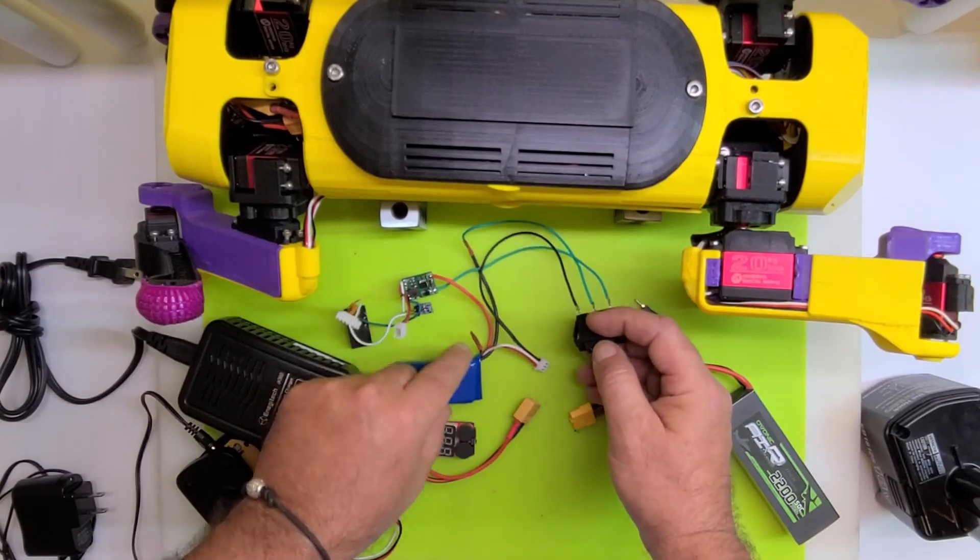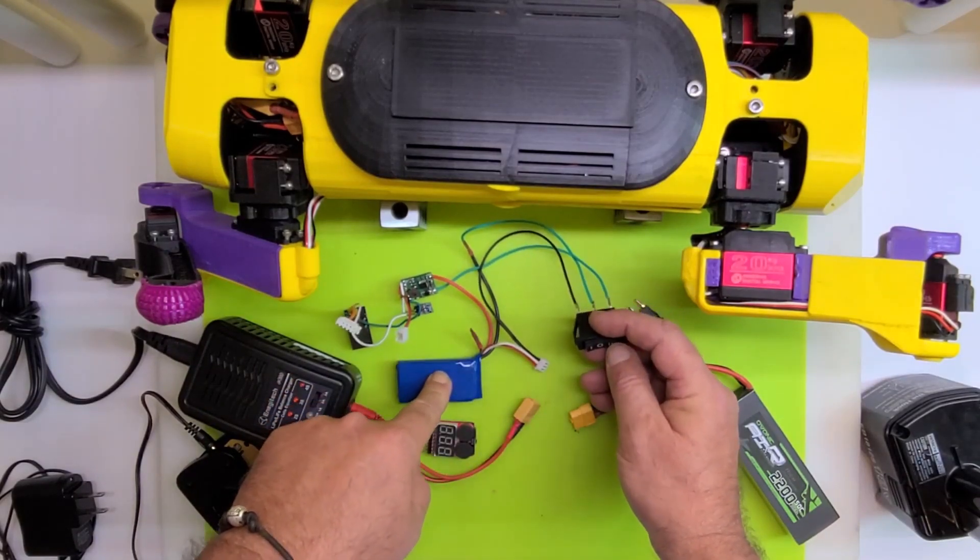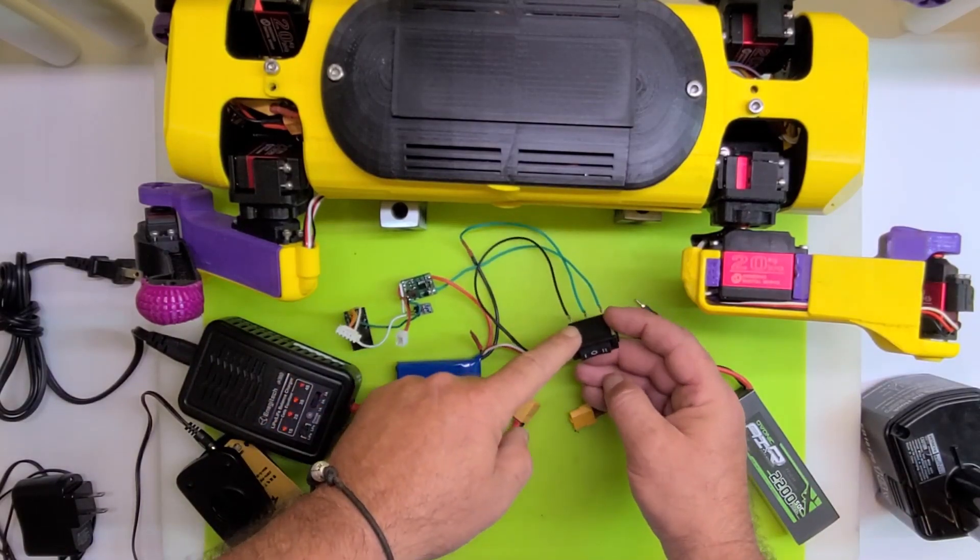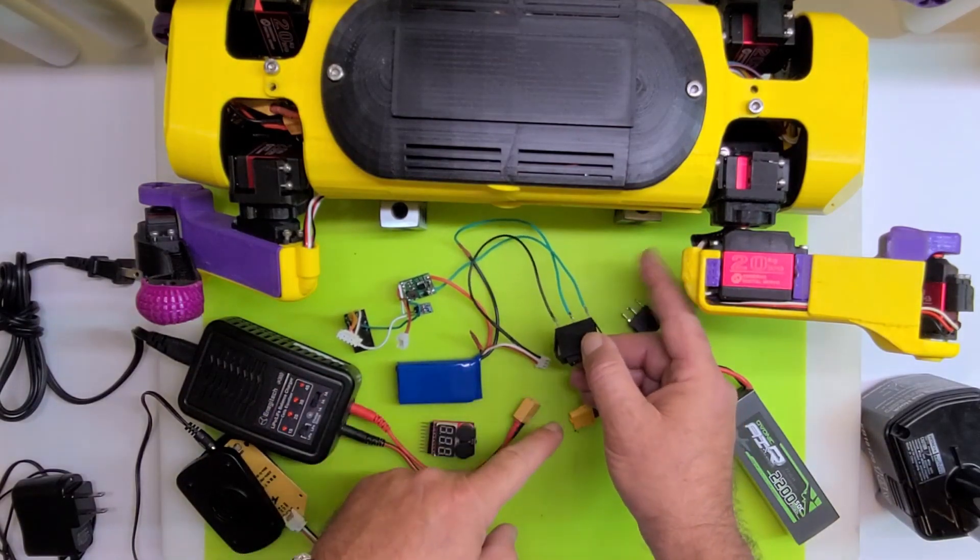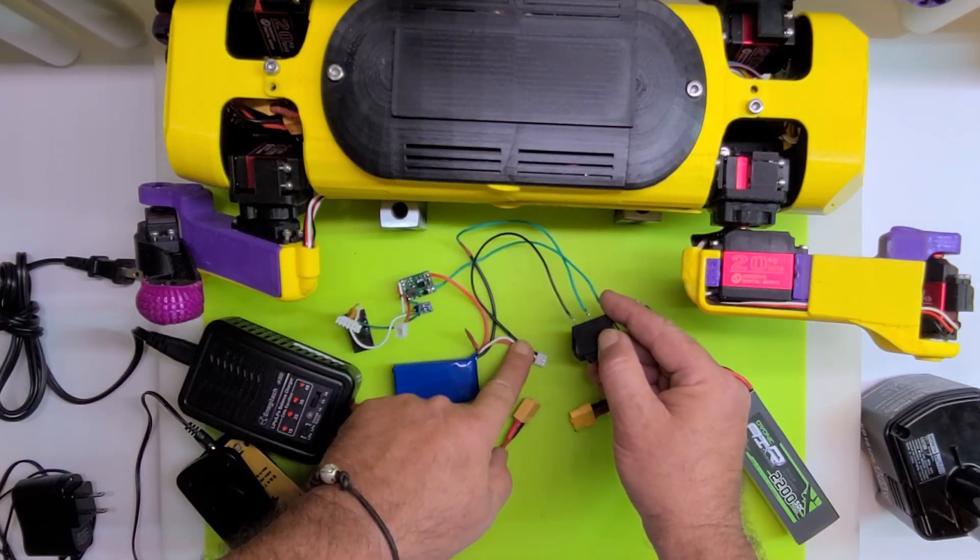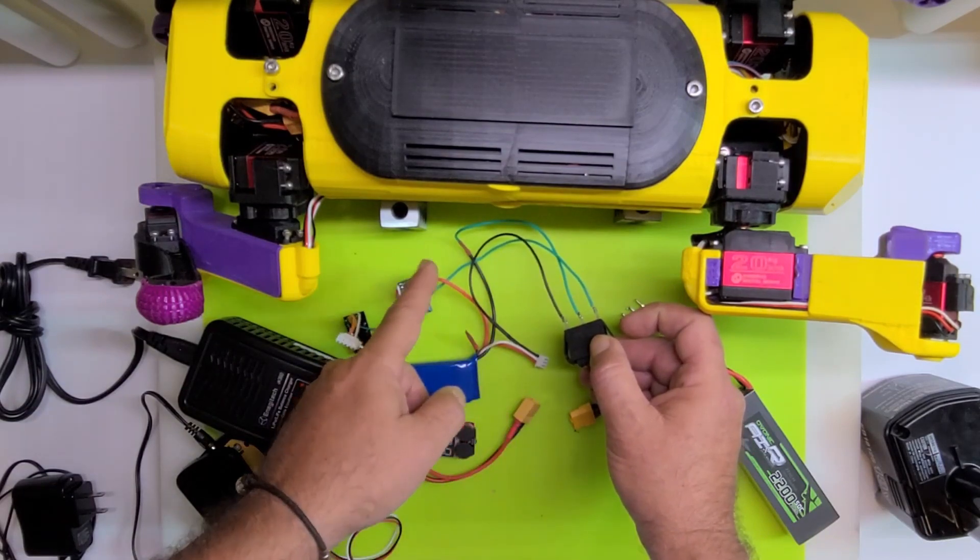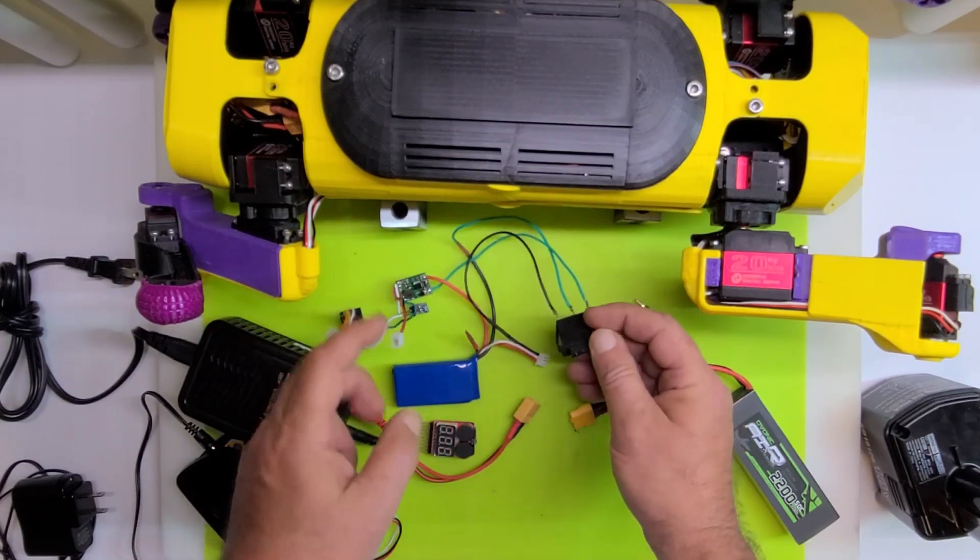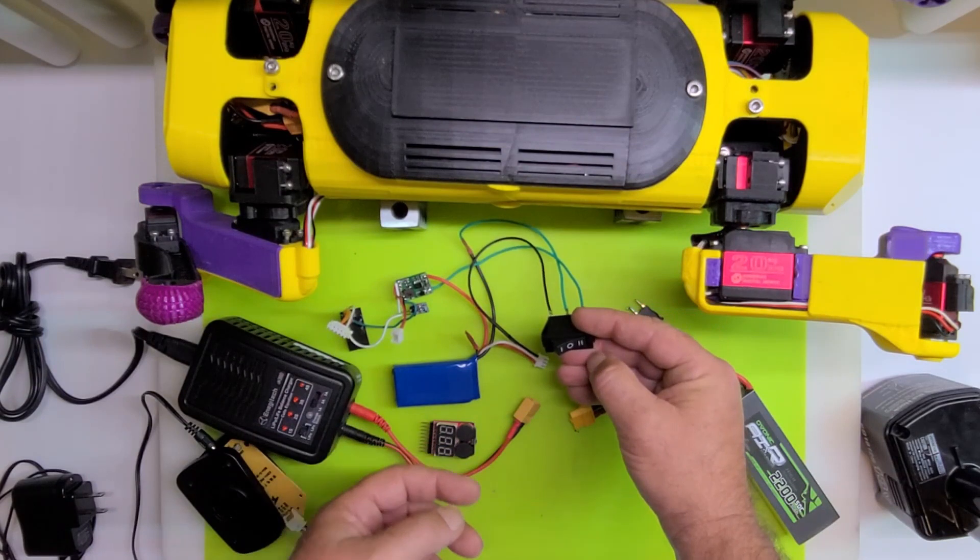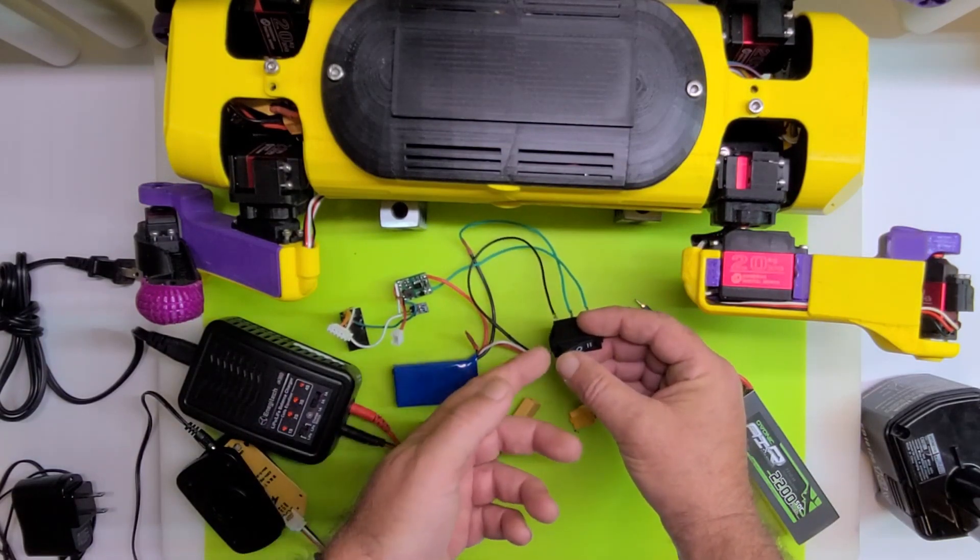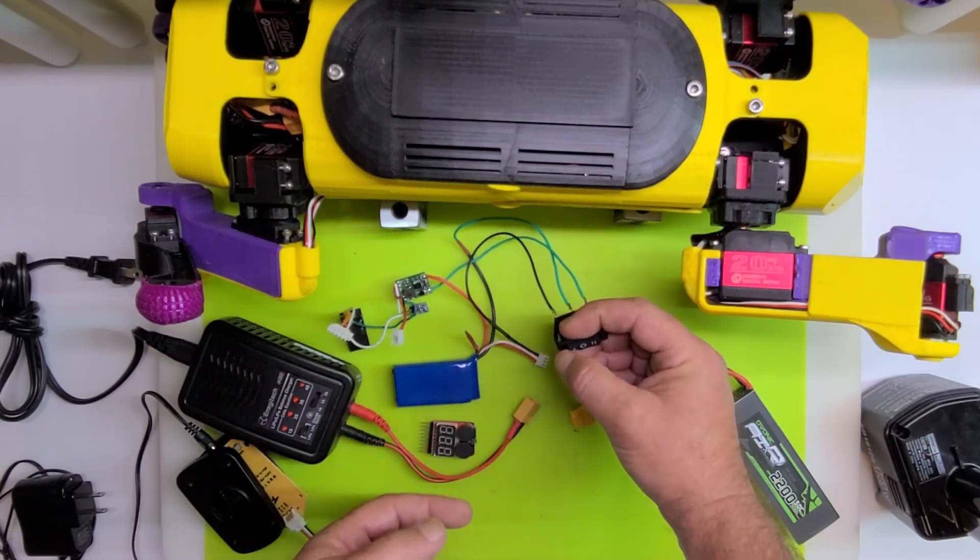So as I've just stated, you cannot have the charger and the device connected at the same time, that's dangerous nor will it charge properly. So this switch controls that. So now basically the ground from the battery goes to the middle terminal on the switch.